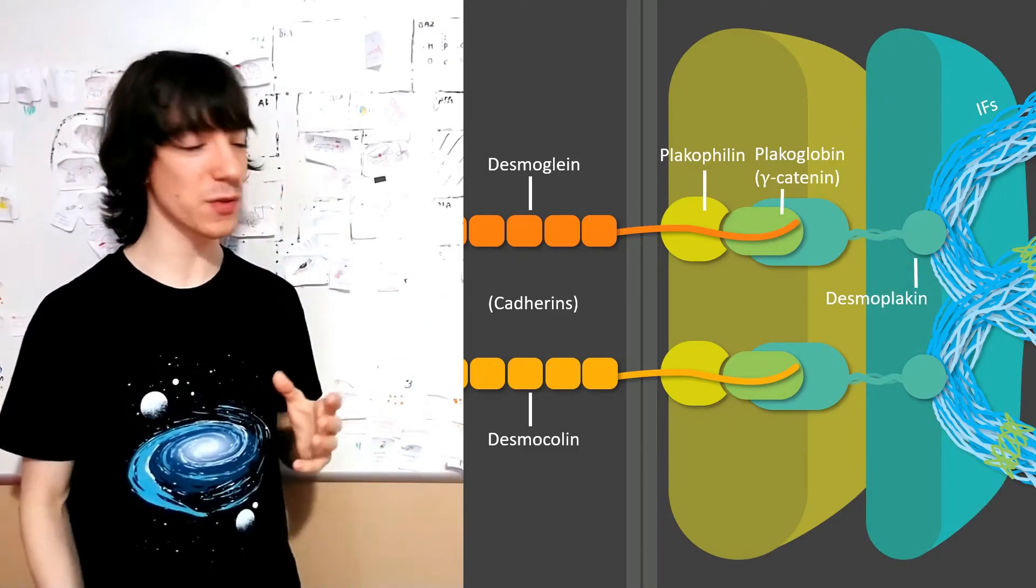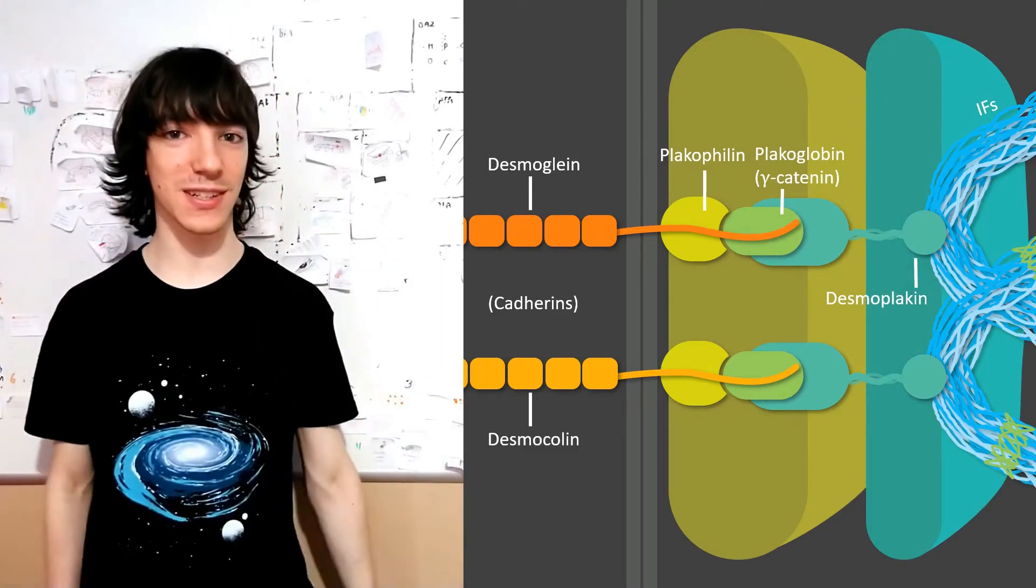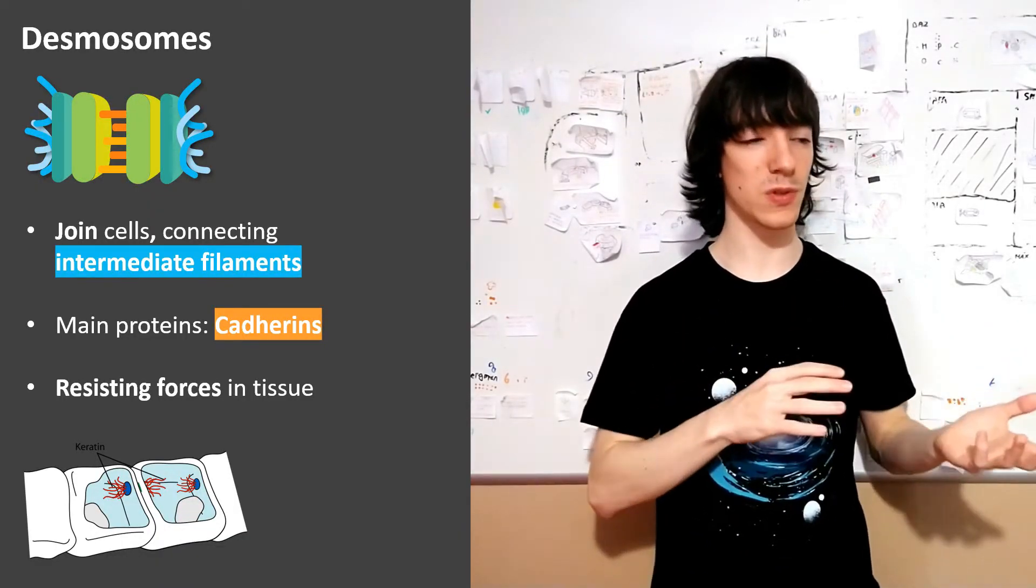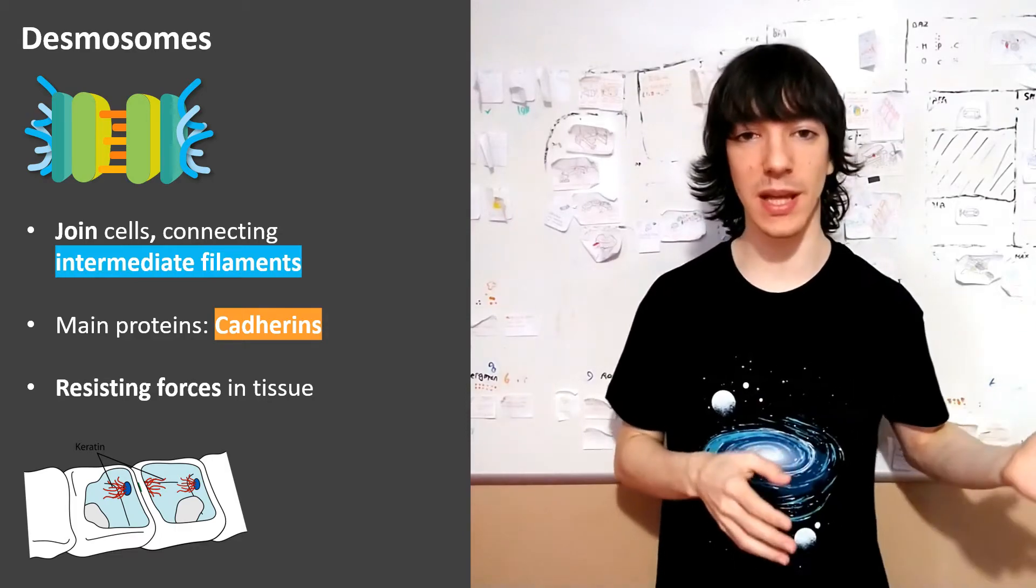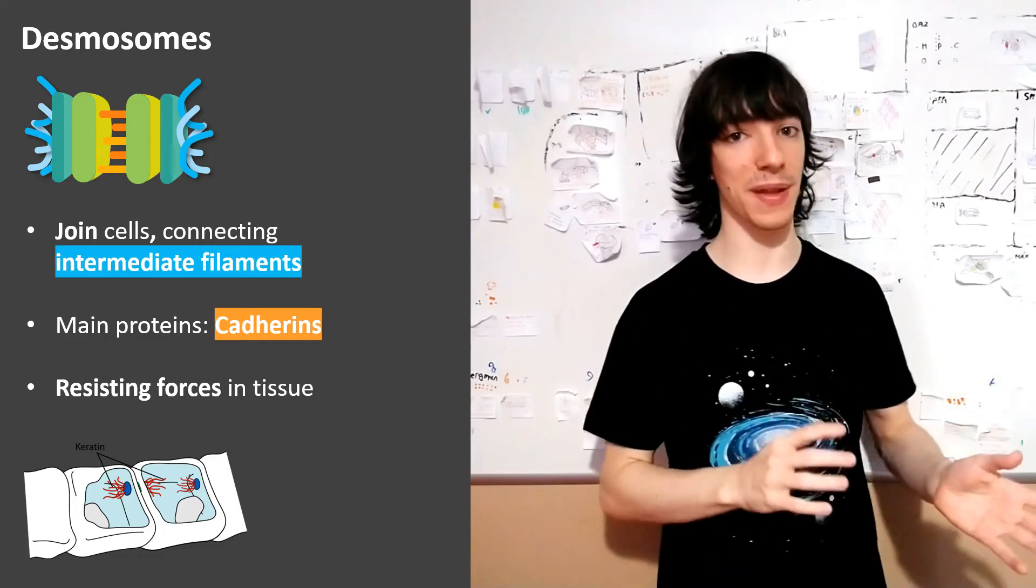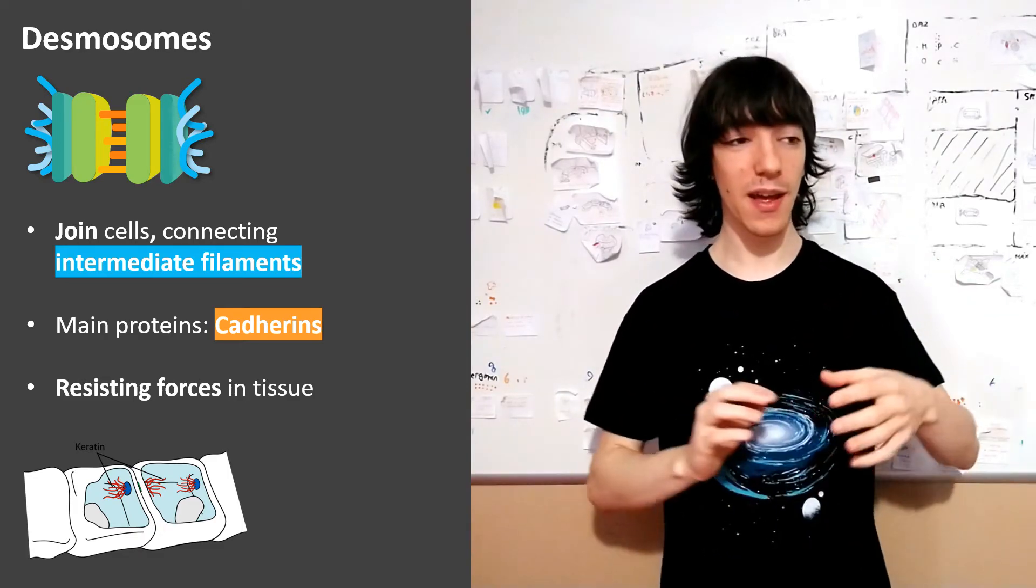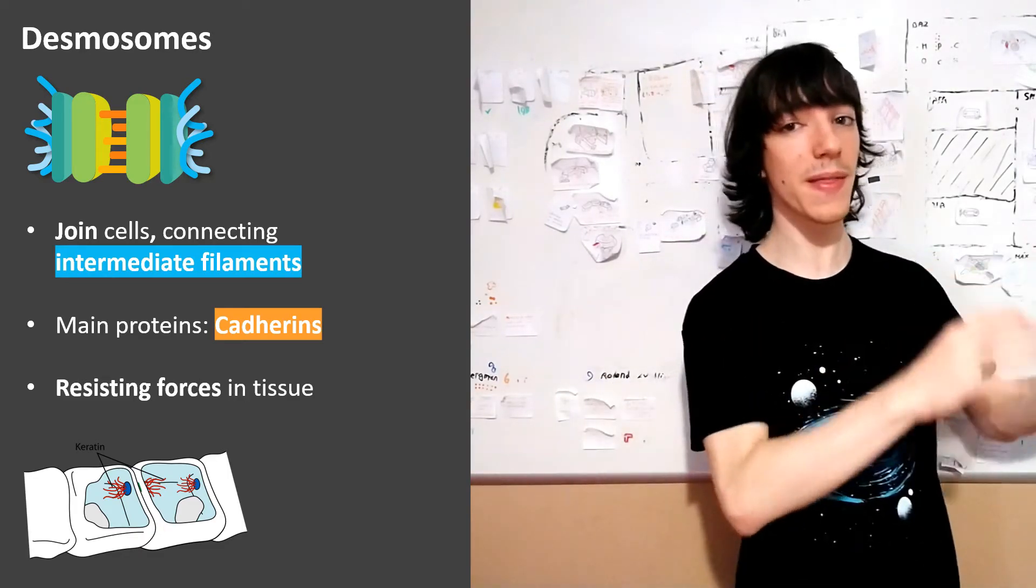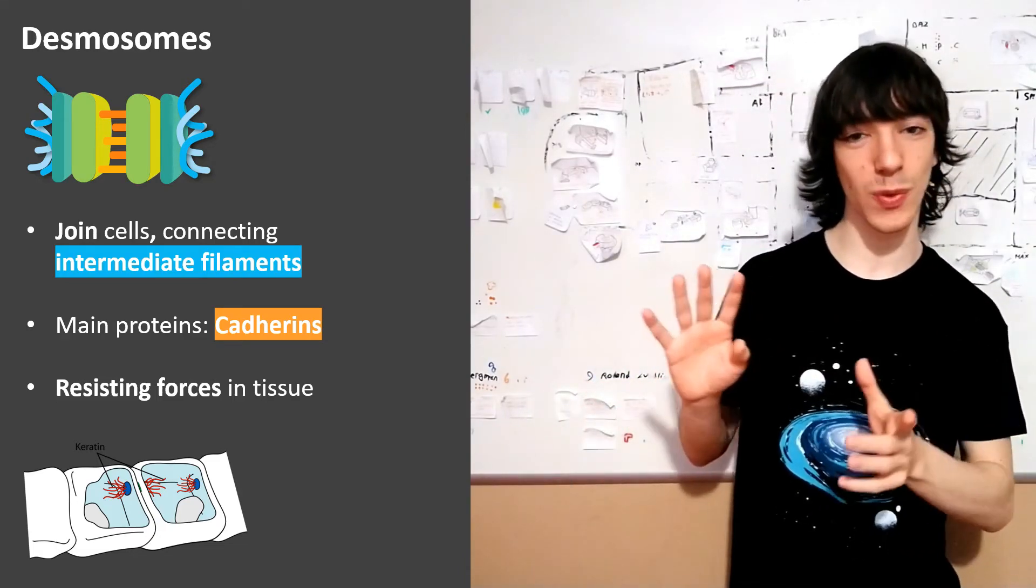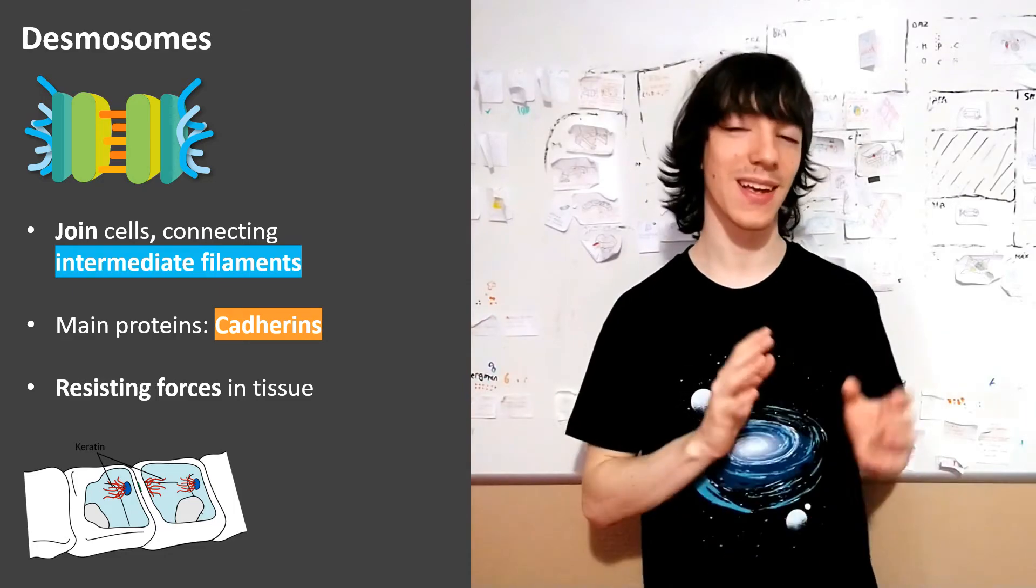By the way, if for some reason your body can't make desmosomes or they are destroyed by the immune system, you're in serious trouble because your skin would fall off. And that's something that happens. The disease is called pemphigus. And if you're studying this in the context of medicine, you're probably going to hear about it.